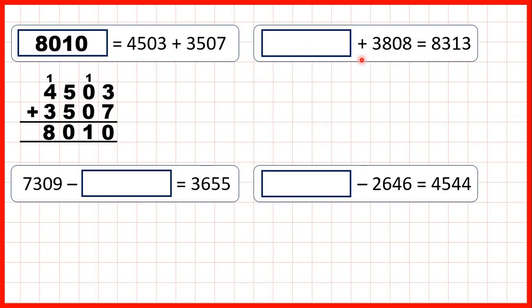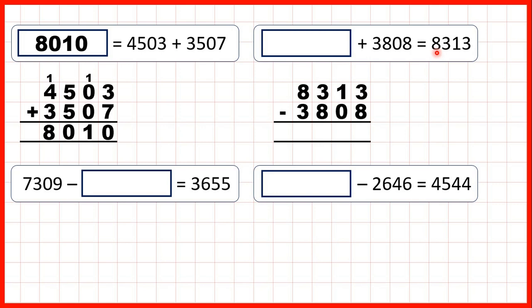Now, something plus 3,808 equals 8,313. Here we can see that one of the numbers in our addition calculation is missing, and whenever we have a missing number in an addition problem we always use subtraction to find our missing number. So we can work out 8,313 minus 3,808.